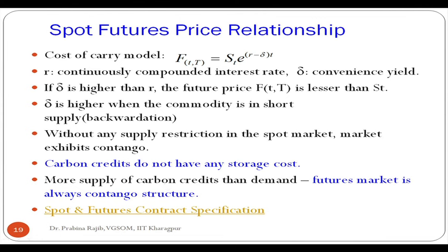When pricing carbon futures contracts, we do not need to adjust for storage cost because there is no cost associated with storing carbon credits. Additionally, delta is also zero because carbon credits are available in abundant amounts for trading — in fact, supply is more than demand. So the futures market is always in contango when carbon credits are the underlying.